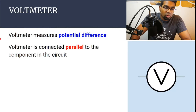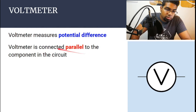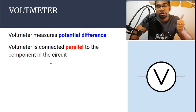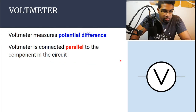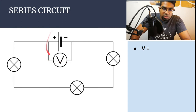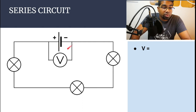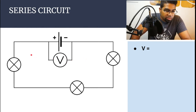Now let's look at potential difference. A voltmeter is used to measure potential difference. The voltmeter is connected in parallel — connected in a new path alongside the component in the circuit, not along the same path of current. This is how we connect the voltmeter to the dry cell to measure the potential difference supplied by the power source. This V represents the total potential difference in the circuit — specifically the terminal potential difference from positive to negative terminal, not the EMF.